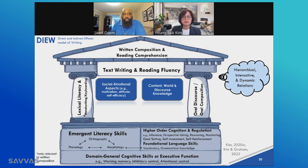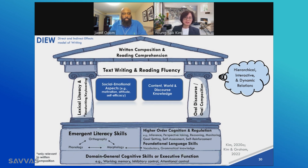The two pillars sustain the beam and roof because they're absolutely necessary for written composition and reading comprehension. If one of the pillars is missing or absent, the building structure doesn't hold, so they are necessary.